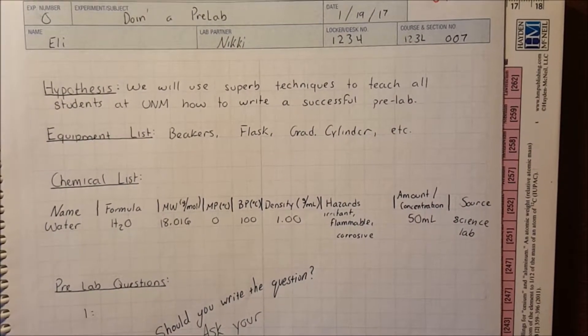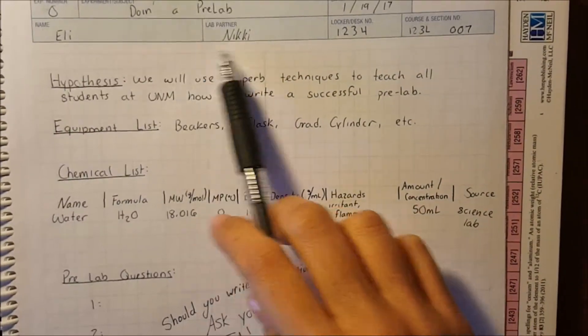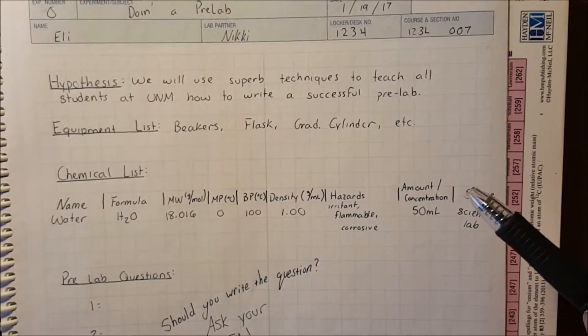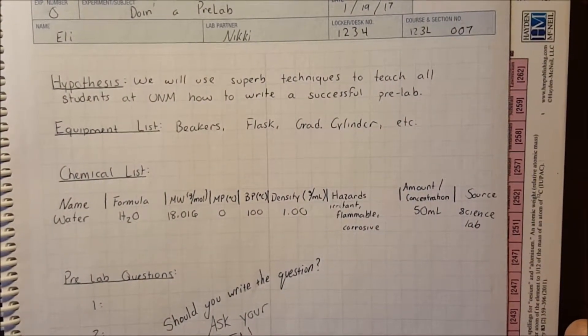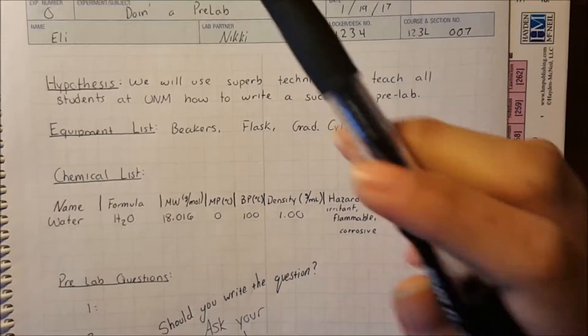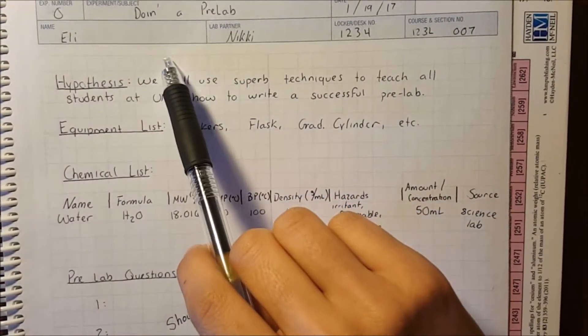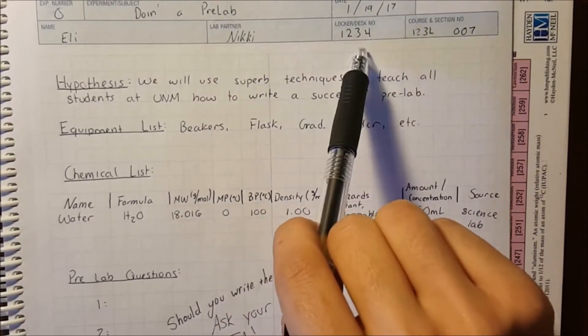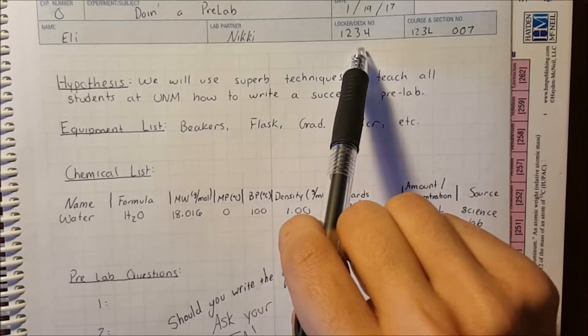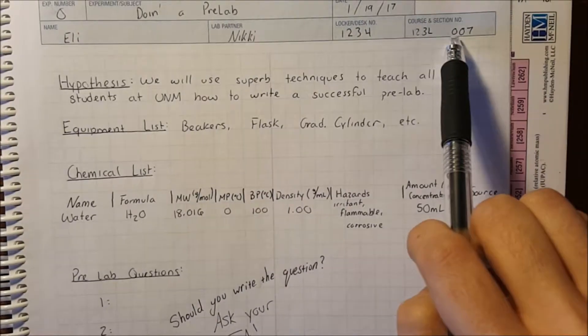First, each page of your lab notebook has a blue heading section. This will need to be done on every page that you turn into your TA. It includes the experiment number, lab title, date, your name, your partner's name, your desk or locker number, you'll have a drawer, and your course and section number.